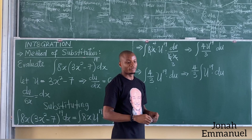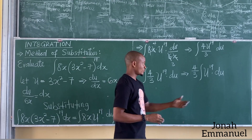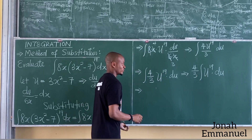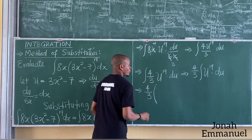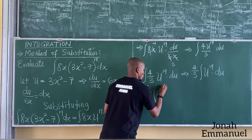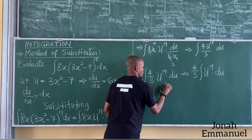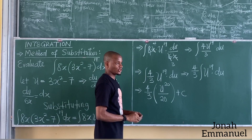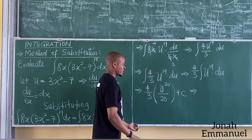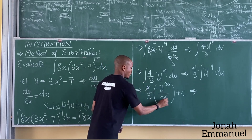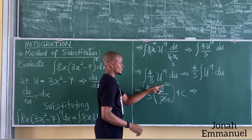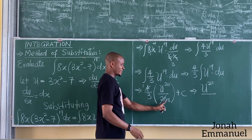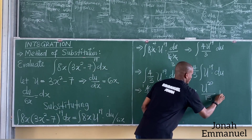This now looks like a problem for the general method as we did in the last class. Using the general method — simply add 1 to the power — it becomes 4 over 3 times u to the power 20 all over 20, plus c. Simplifying: 4 over 20 reduces — 4 gives 1 and 20 gives 5 — so this becomes u to the power 20 all over 15, plus c.